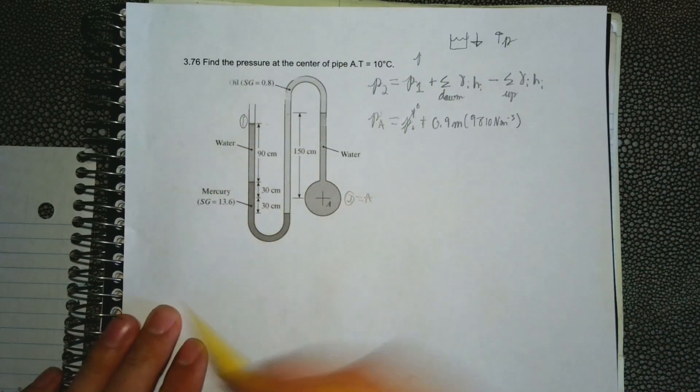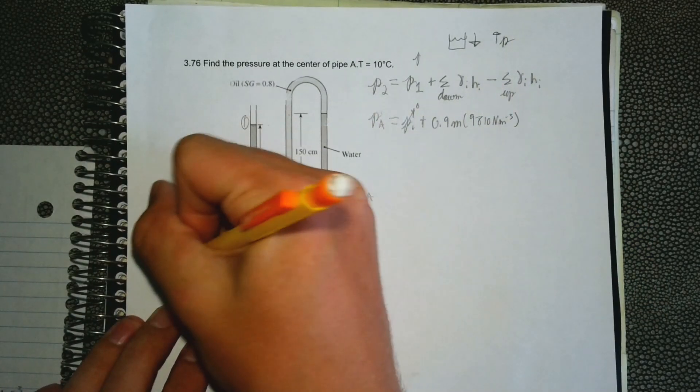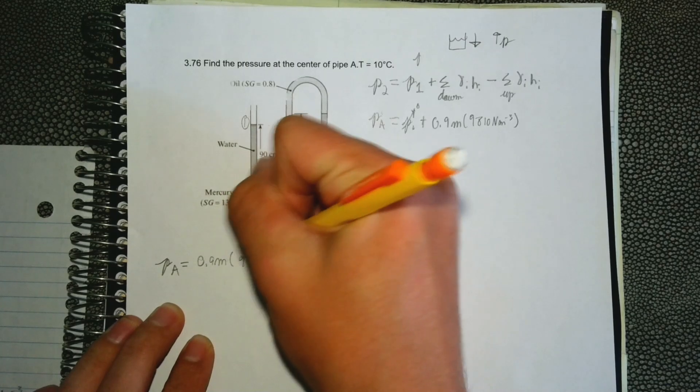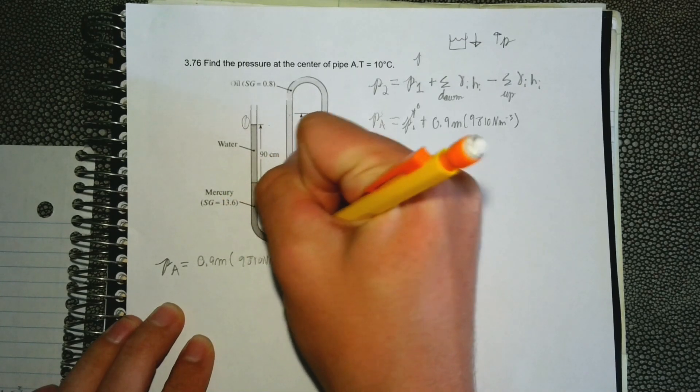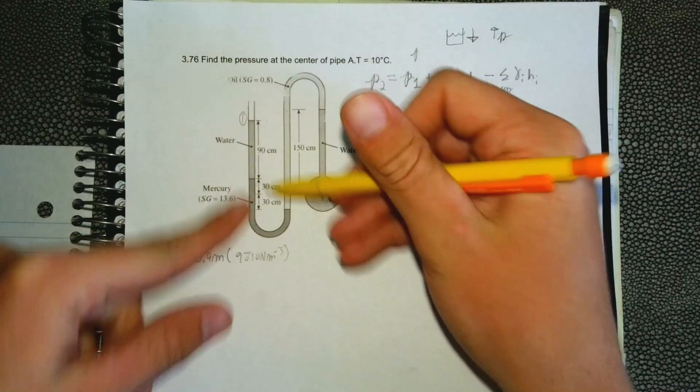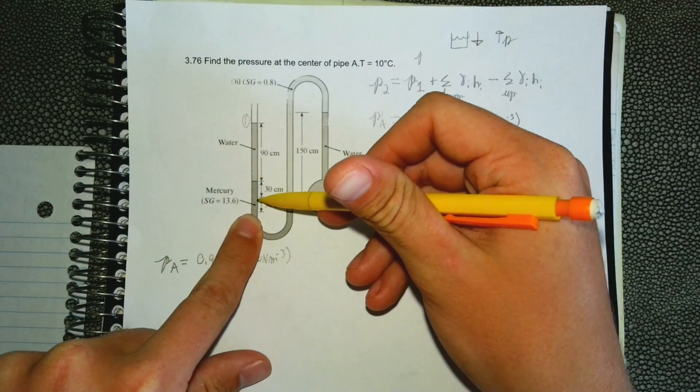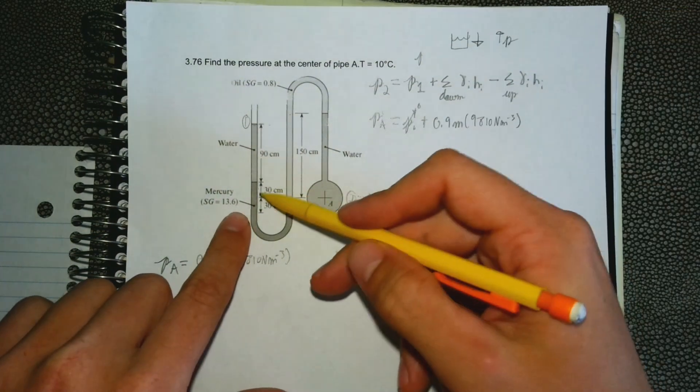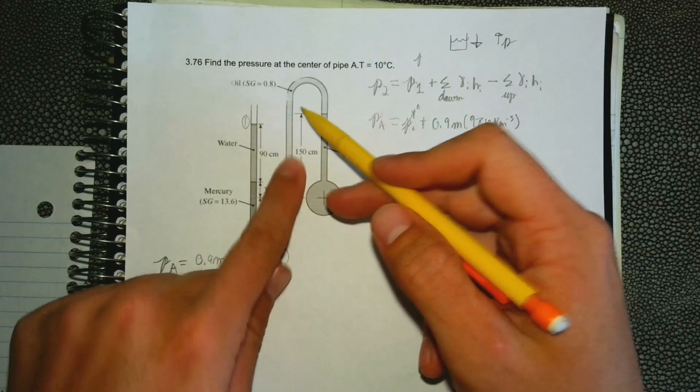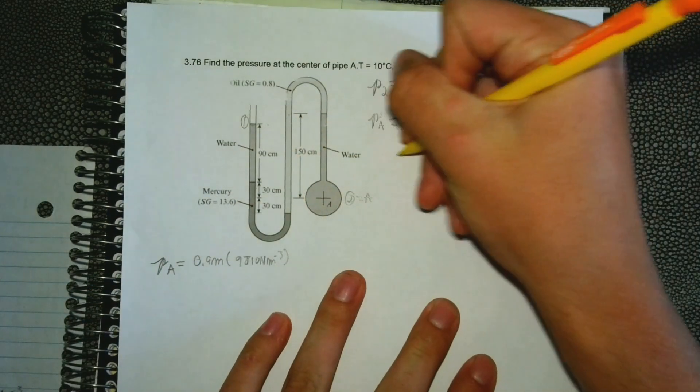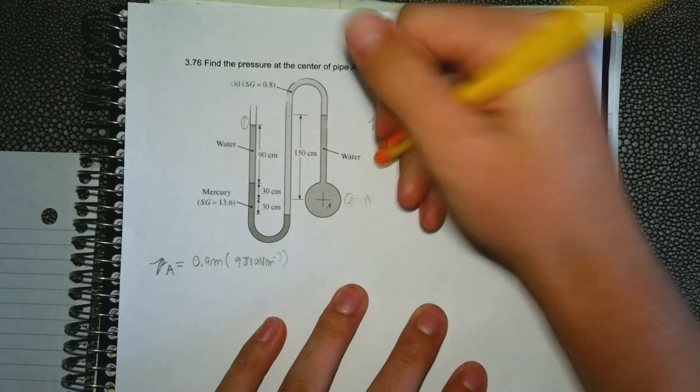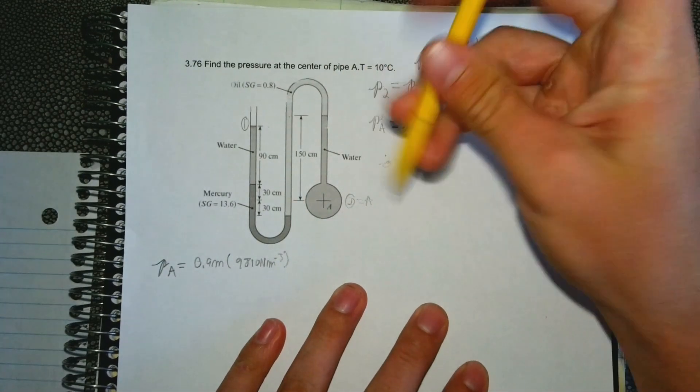I'm going to go ahead and write this down so I have more space. We have to go down again but this time it's through mercury. So I forgot a step here, we need to find the specific weight of mercury and we need to find the specific weight of oil.